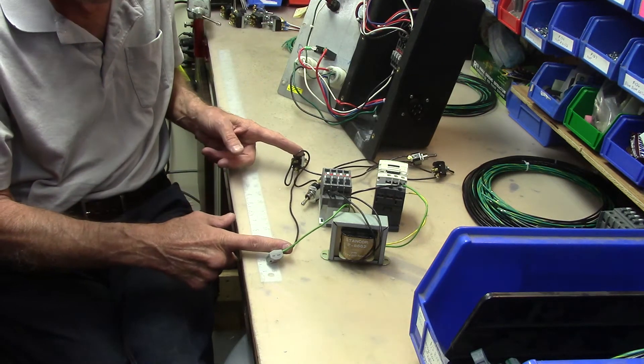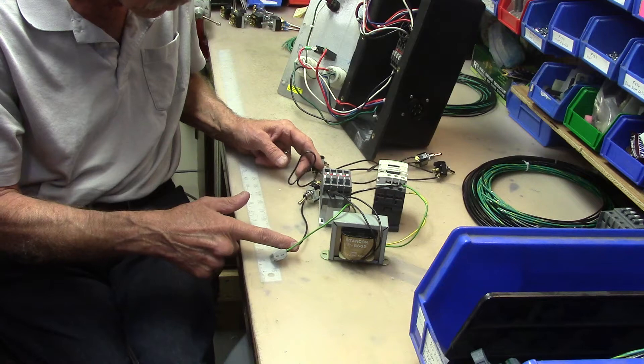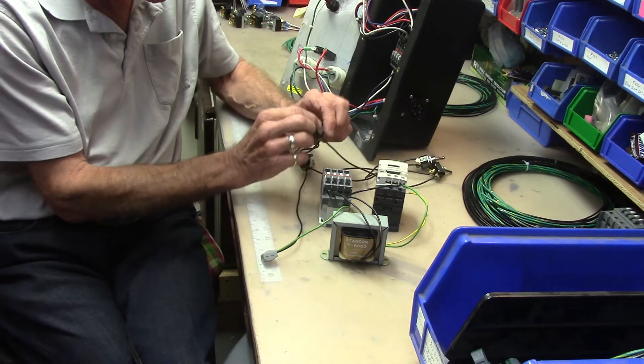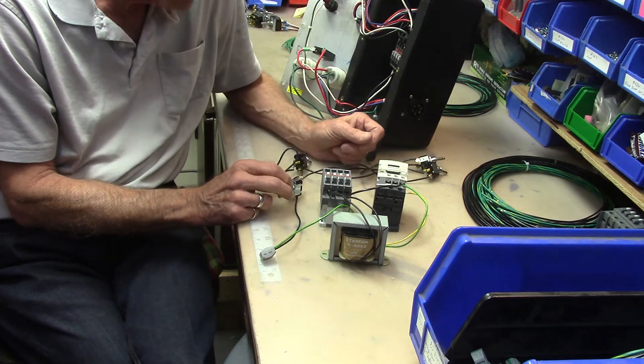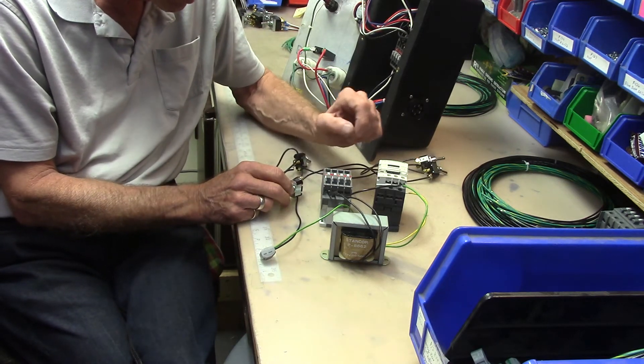You can ohms check these wires with your meter to see if there's good continuity. You can ohms check the switches to see if you have good continuity here. The last thing that I would suspect is an issue would be the contactor.